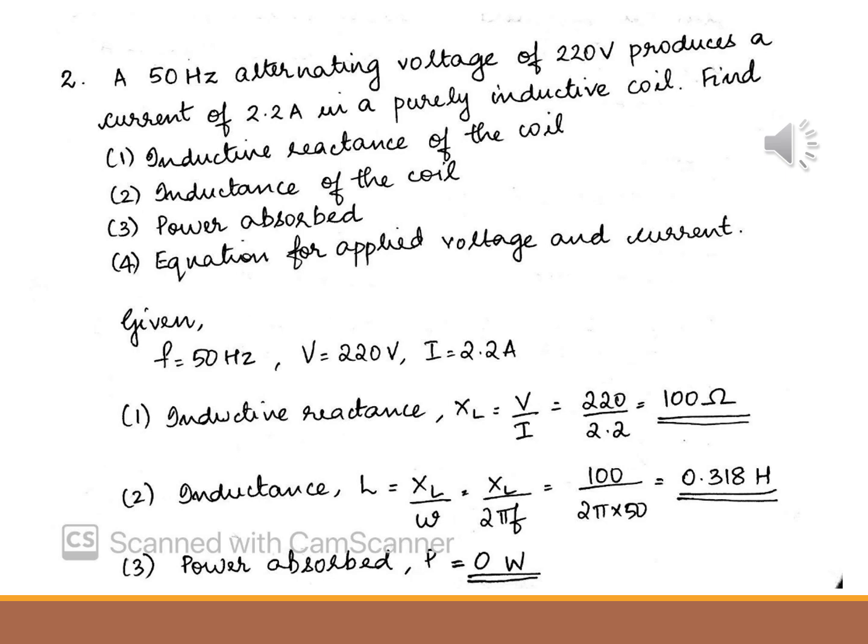To find the inductance of the coil, XL equals L times omega, so L equals XL divided by omega, where omega equals 2 pi F. Substituting the values of XL and F, we get the inductance to be 0.318 Henry. As already learned, the power absorbed by a purely inductive coil is 0.